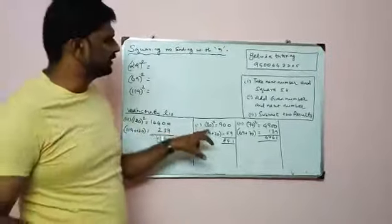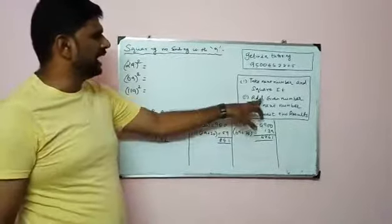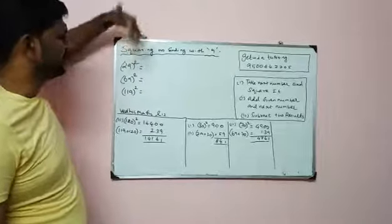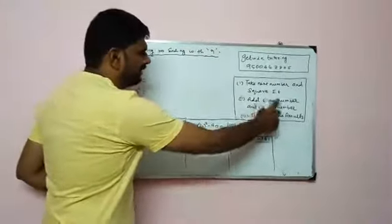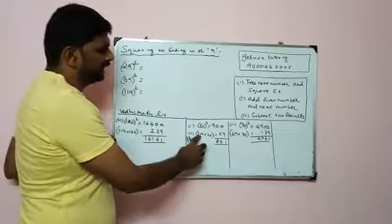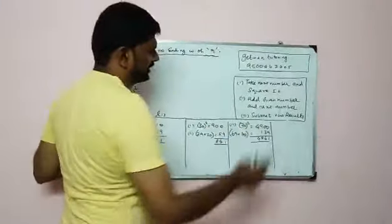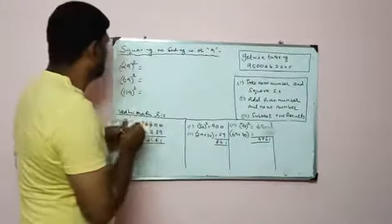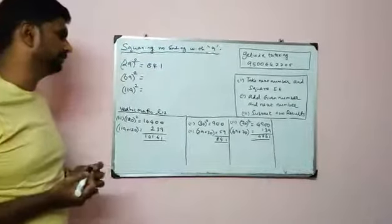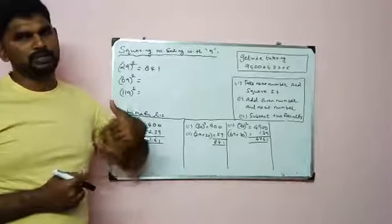29's next number is 30, and 30 squared is 900. Step 2, add the given number and next number. Given number is 29, next number is 30, they add to 59. Third step, subtract the two results. 29 squared is 841.